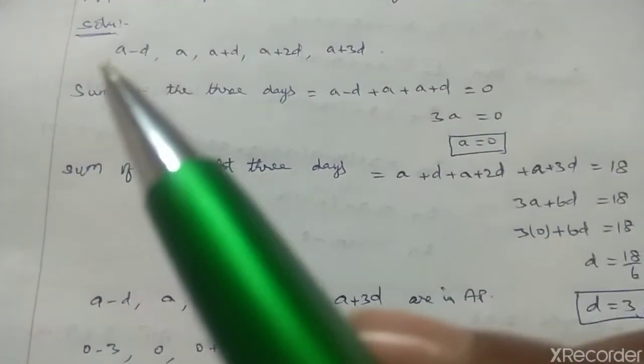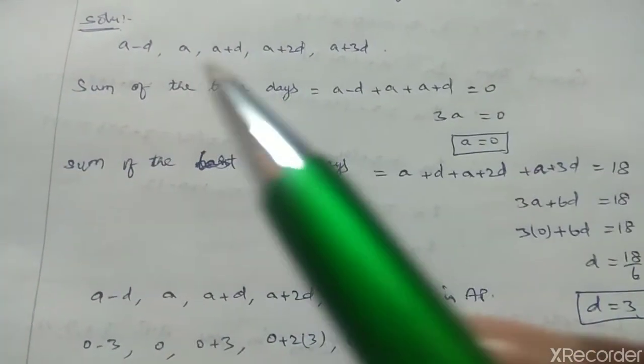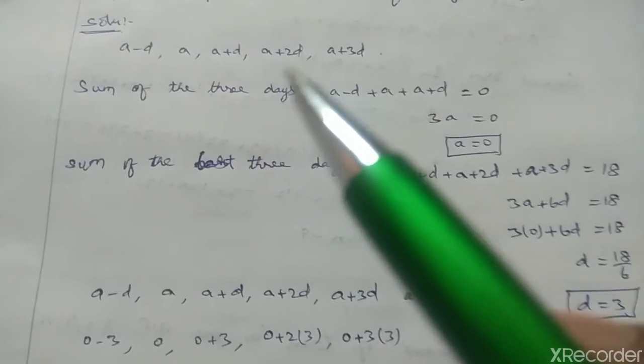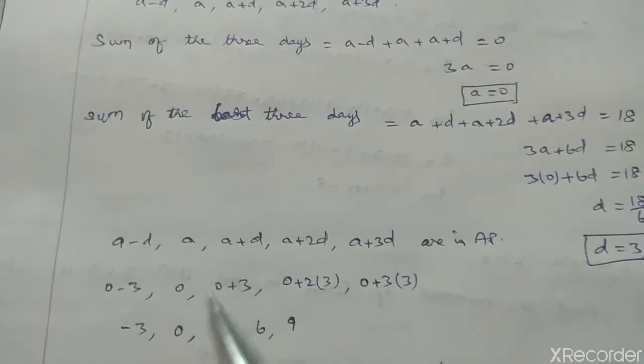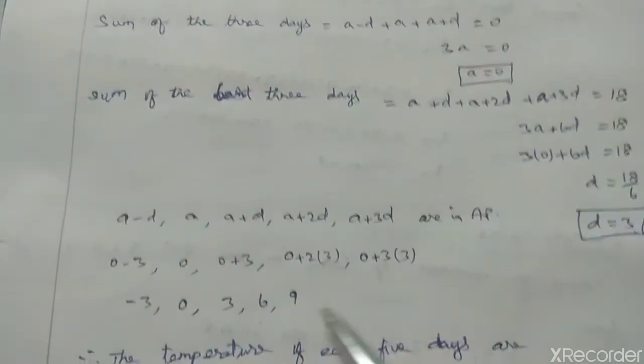A value 0 and D value 3. The terms are: 0 minus 3, 0, 0 plus 3, 0 plus 2 into 3, 0 plus 3 into 3. So minus 3, 0, 3, 6, 9.